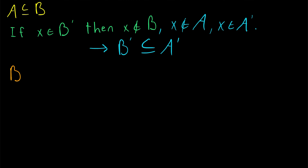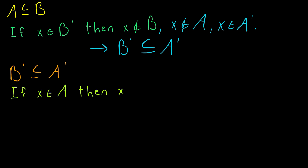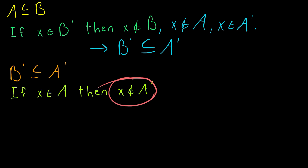Now we have proven the first direction. For the next step, we assume that B complement is a subset of A complement, and we want to use this assumption to prove that A must be a subset of B. Since we want to show that A is a subset of B, we will begin with an element of A. So let X be an element of A. If X is an element of A, then by definition of set complement, X is not an element of A complement. Remember, our goal is to show that X must also be an element of B, and we just said that X is not an element of A complement since it is an element of A.